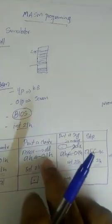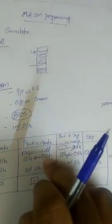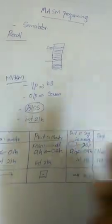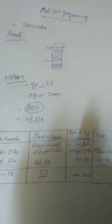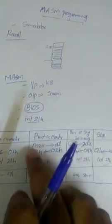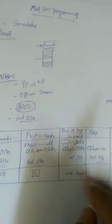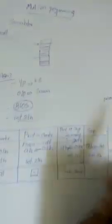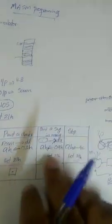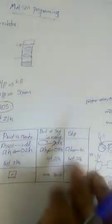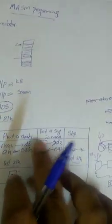If the parameter is 02H, it identifies that a character is to be printed. The ASCII code of the character to be printed is placed in the DL register, and the character will appear on the screen. If I have a string, I will put the string address — the offset address — in the DX register.